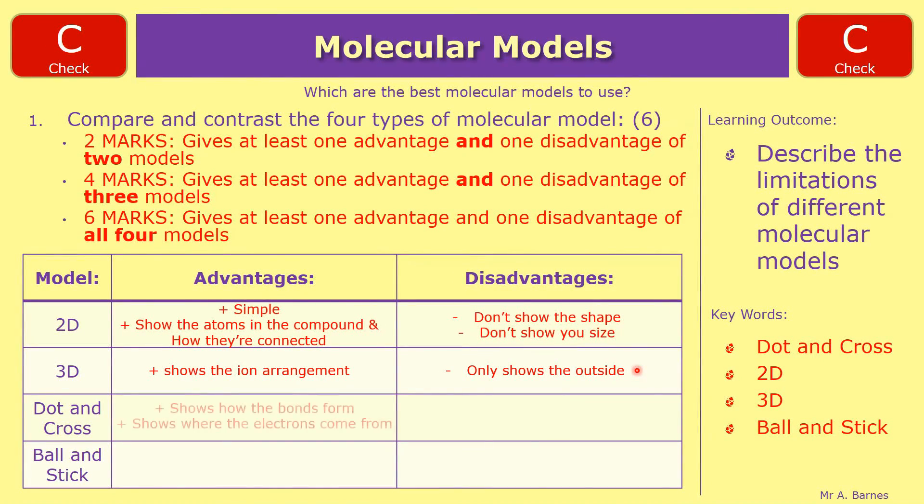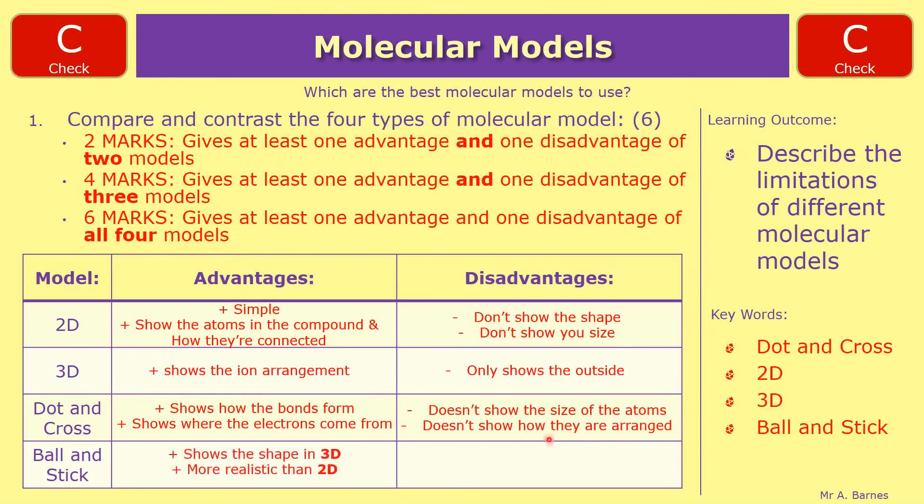Dot and cross shows how the bonds form and shows where the electrons come from. However, it doesn't show the size of the atoms and it doesn't show how they are arranged.